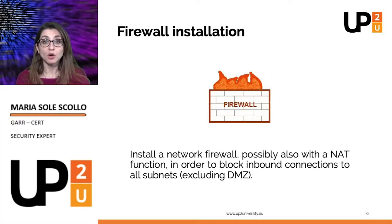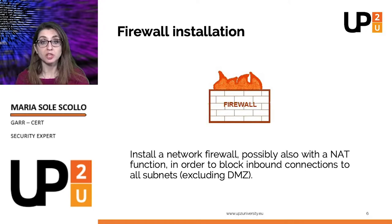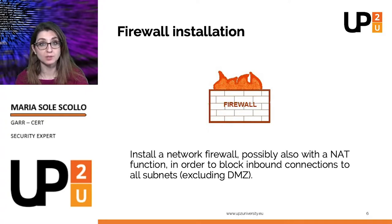The first line of defense should involve the firewall between the network and the internet. Other options include the use of network address translation and access control lists. Authorized remote access should be enabled through the use of secure tunnels and virtual private networks.